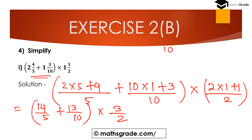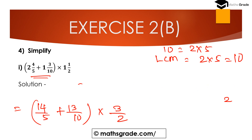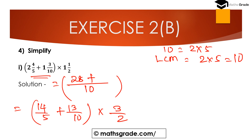Prime factorization of 10 is 2 multiplied with 5, so LCM is 2×5 which is 10. Now 10 divided by 5 is 2, 2 multiplied with 14 is 28. And 10 divided by 10 is 1, 1 multiplied with 13 is 13. The result inside the bracket is 28 plus 13 over 10, multiplied by 3/2.